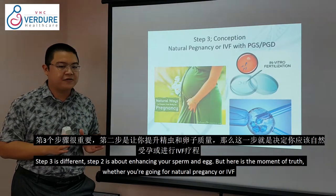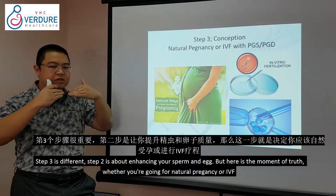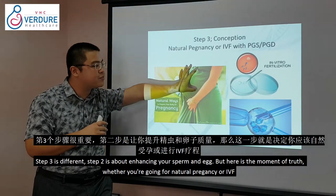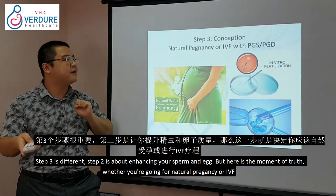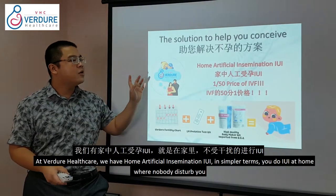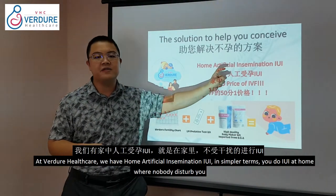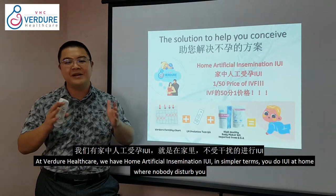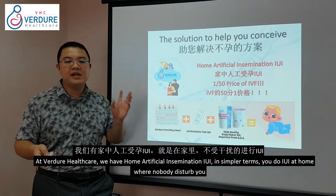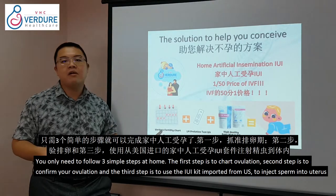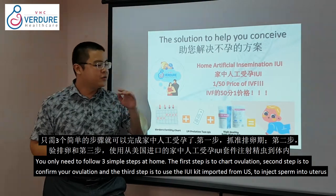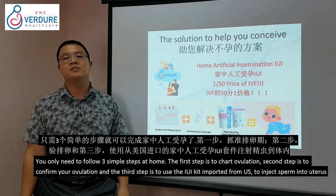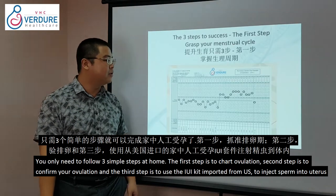Step 3 is the moment of truth — whether you are going for natural pregnancy or IVF. For natural pregnancy, we offer Home Artificial Insemination IUI. The process involves 3 simple steps: track your ovulation, confirm your ovulation, and use the IUI toolkit we imported from the US to help the sperm reach the egg.